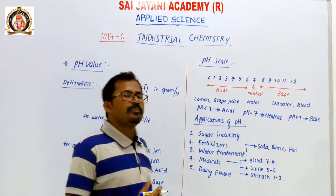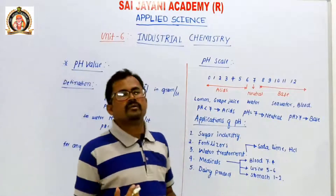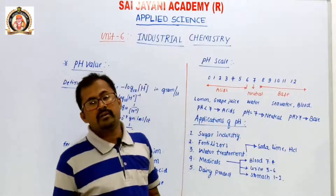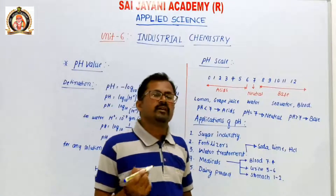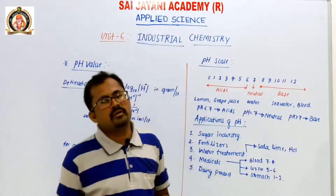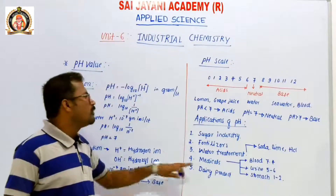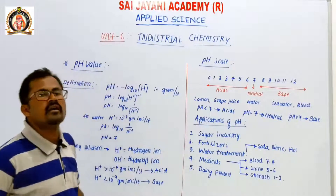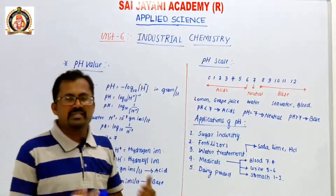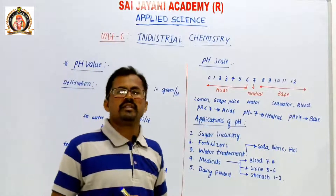Next, dairy products: milk, curd, butter milk, butter, and cheese. We have to maintain the proper pH value — this is the correct ratio for bi-products. In the case of dairy products, pH value is used. So these are all about pH value — its definition, pH scale, and applications of pH.